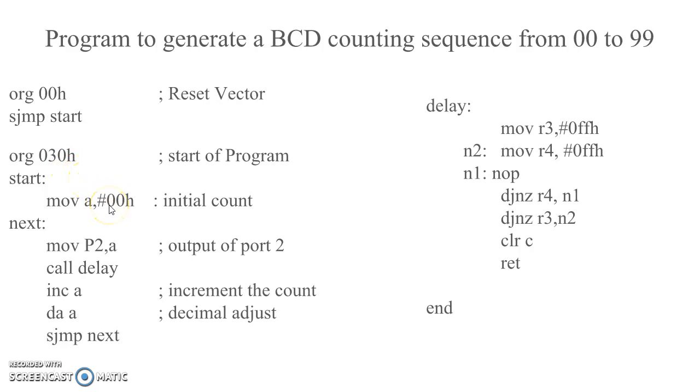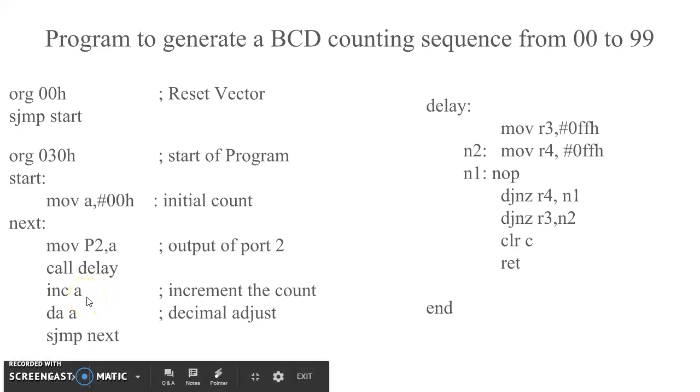In the program, we are loading a count in accumulator, outputting the count on port 2, calling a delay routine, incrementing the count, and adjusting the count to decimal.